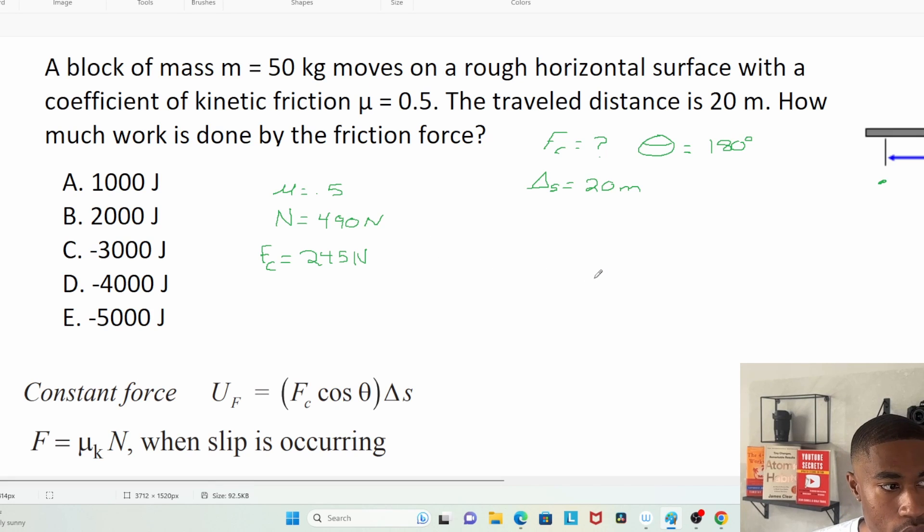We got F_c, now we have everything to get the work done. We should be able to solve for work now. U_F = what's F_c? 245, and what's cosine of theta? Cosine of 180, and all that in parentheses, and then we multiply that by our 20 meters.